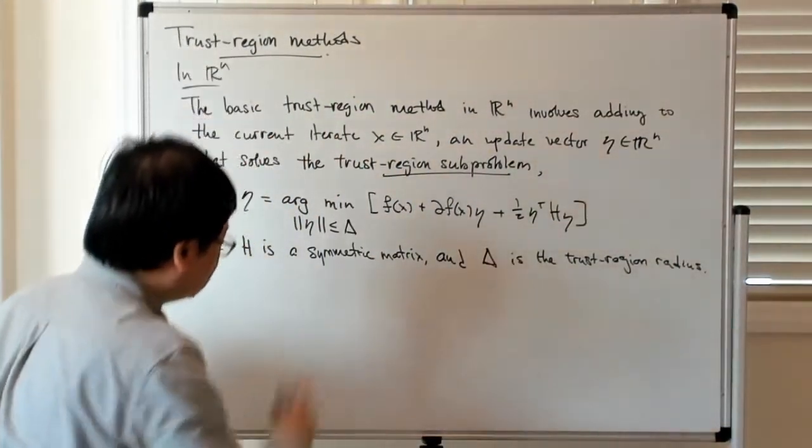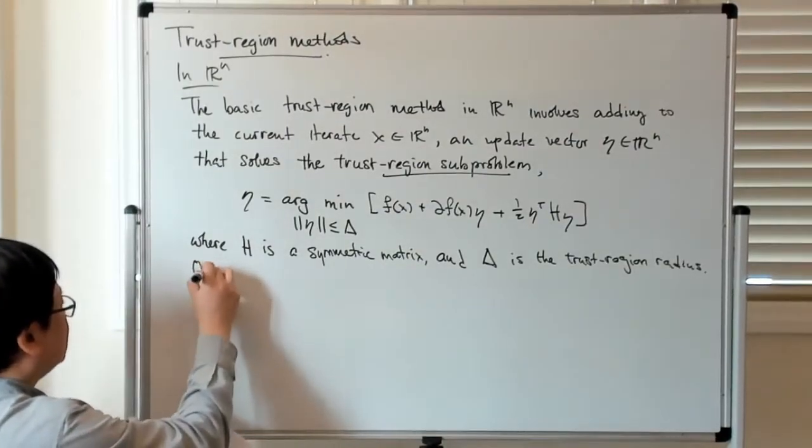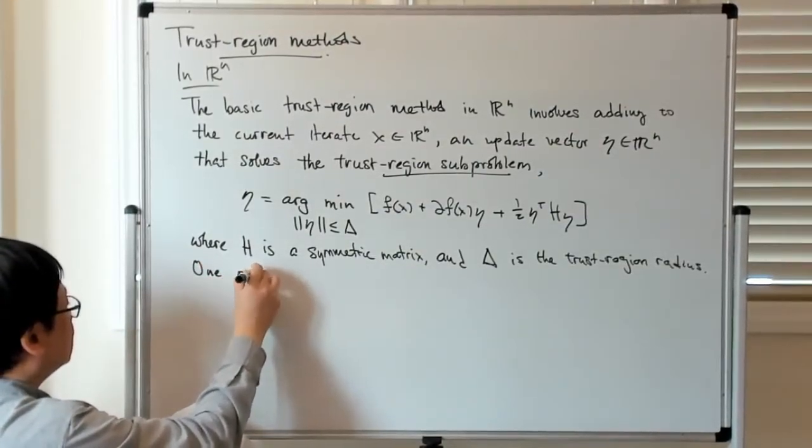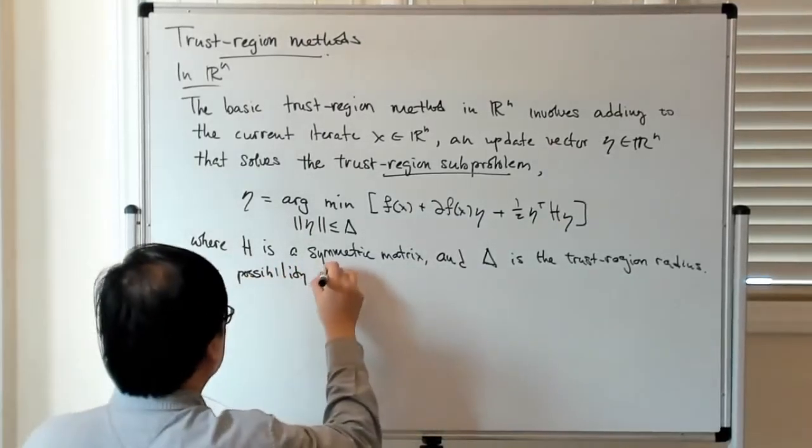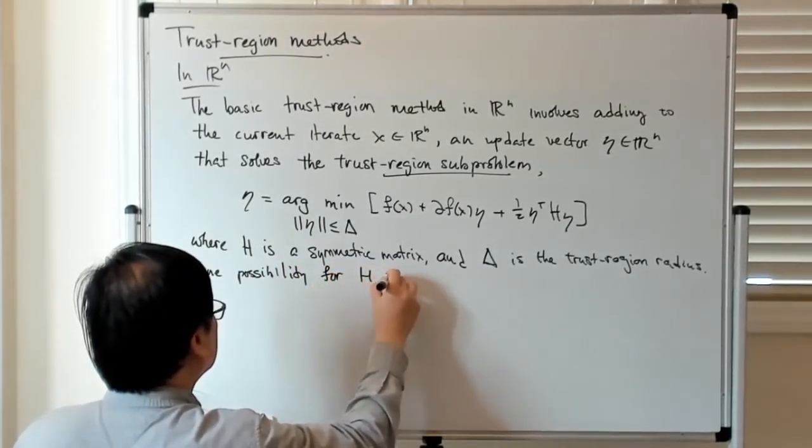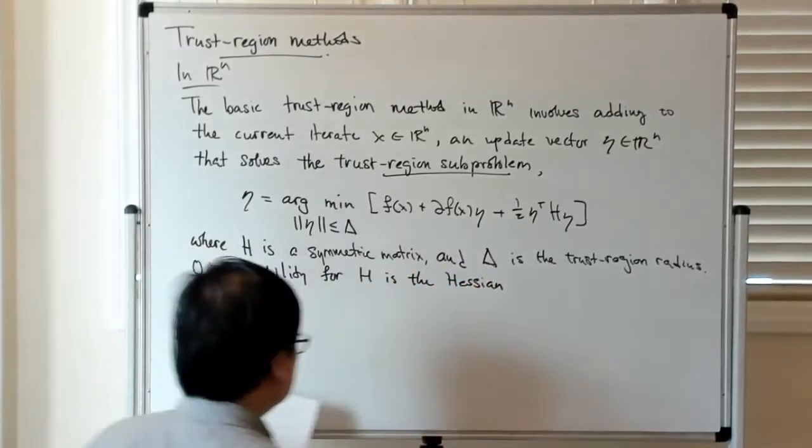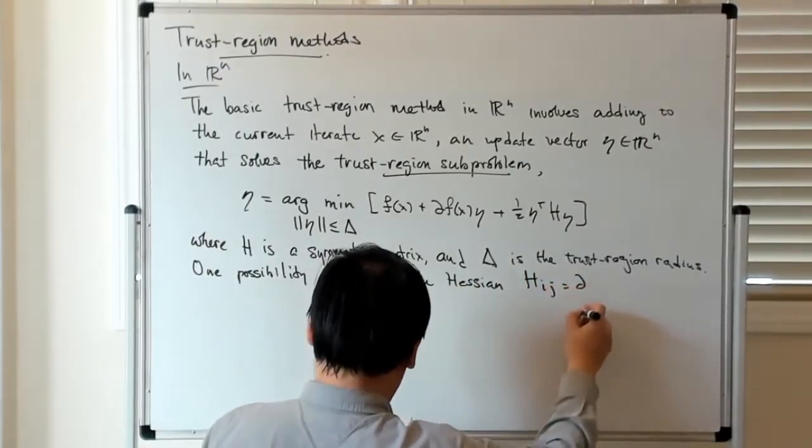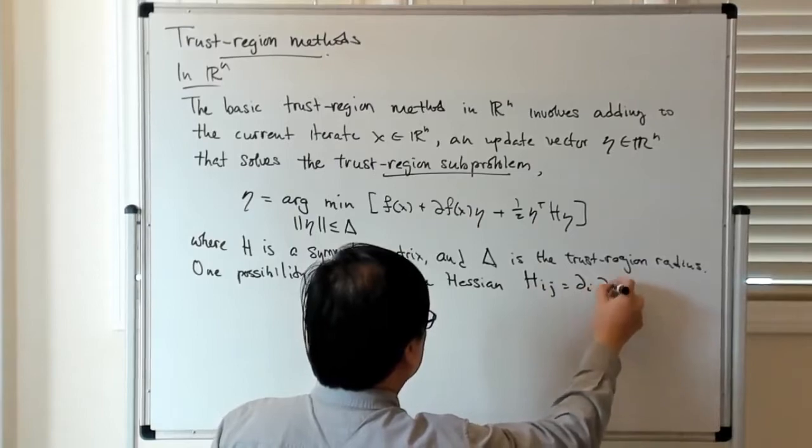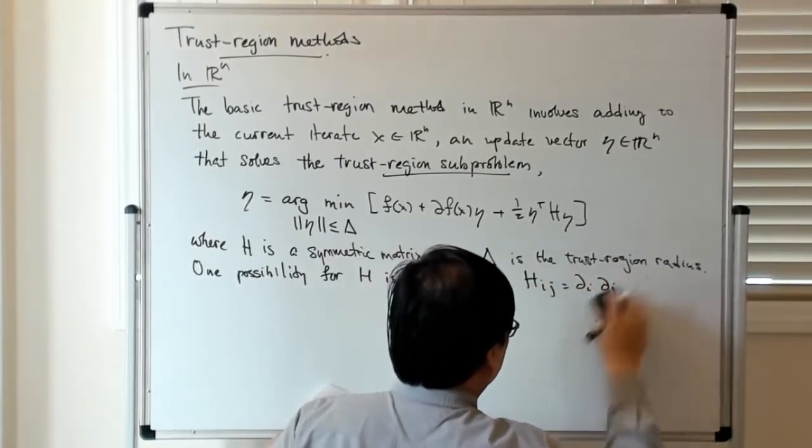So one possibility, obviously, for H is the actual Hessian. So one possibility is the Hessian H_ij is d_i d_j of f of x.